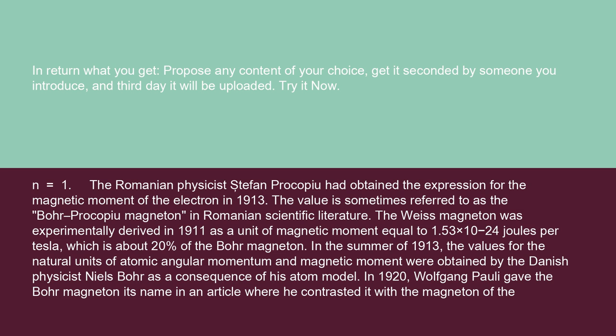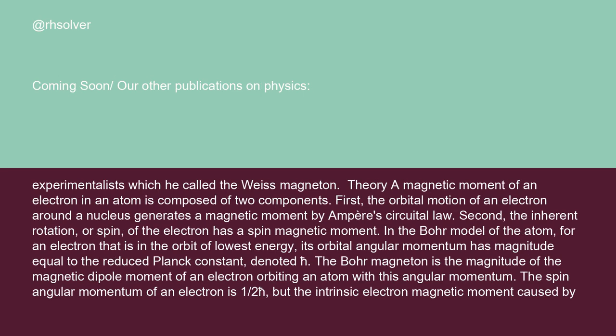In the summer of 1913, the values for the natural units of atomic angular momentum and magnetic moment were obtained by the Danish physicist Niels Bohr as a consequence of his atom model. In 1920, Wolfgang Pauli gave the Bohr magneton its name in an article where he contrasted it with the magneton of the experimentalists, which he called the Weiss magneton.